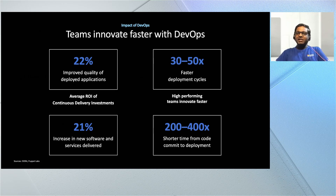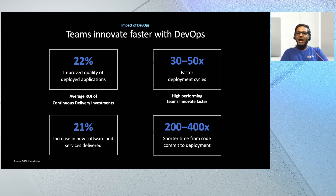There are many ways of achieving continuous delivery for Azure. You can use Jenkins, you can use Azure Pipelines, you can use GitHub Actions. In today's session, I will showcase how you can achieve continuous delivery using GitHub Actions.